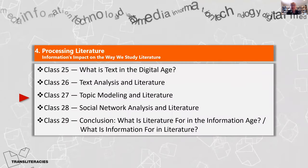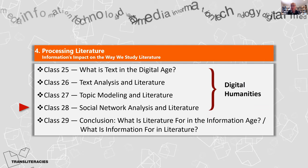In this unit of the course, which is about the impact of the new digital media communication and information technologies on scholarship, research, and the way we process knowledge in the university and in society at large, I brought the argument through text analysis to the topic of social network analysis and literature. This entire set of issues is part of the field of digital humanities, which is strongly related to the digital social sciences and digital sciences on campus as well.